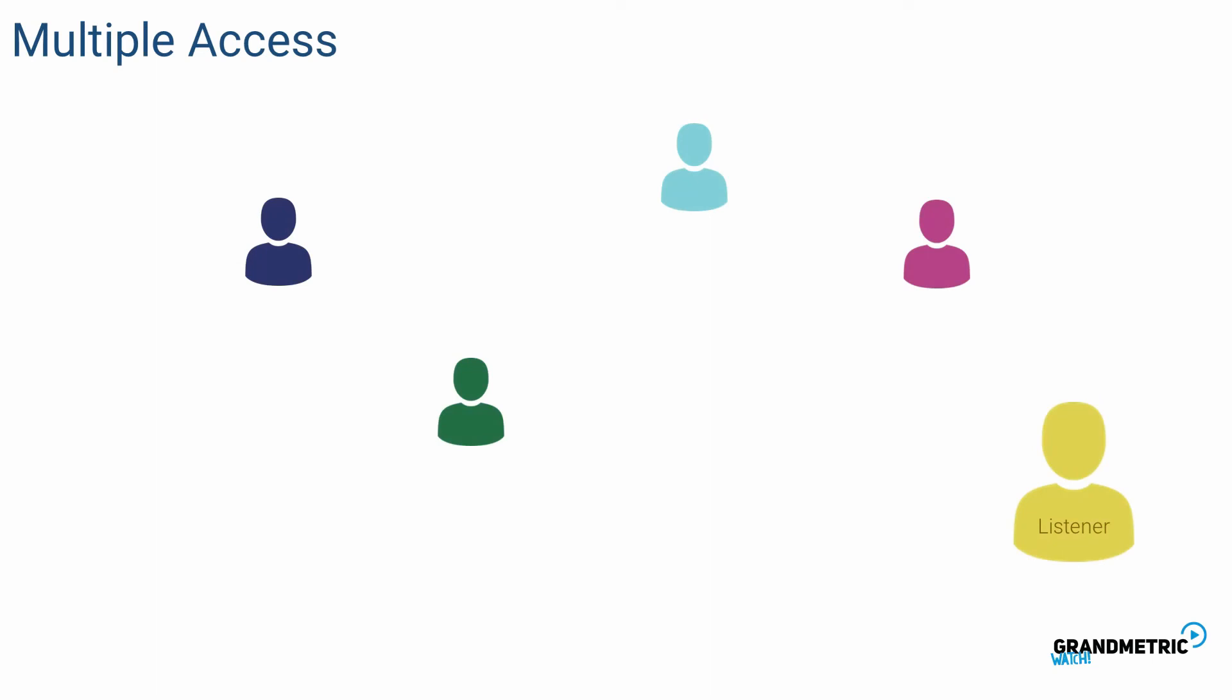How can we arrange communication so that people do not interfere with each other while talking to the listener? The first scenario is similar to time duplexing. This time in time division multiple access we divide time into slots where each user has its opportunity to speak one after another. When the last person's turn is over the whole process repeats.